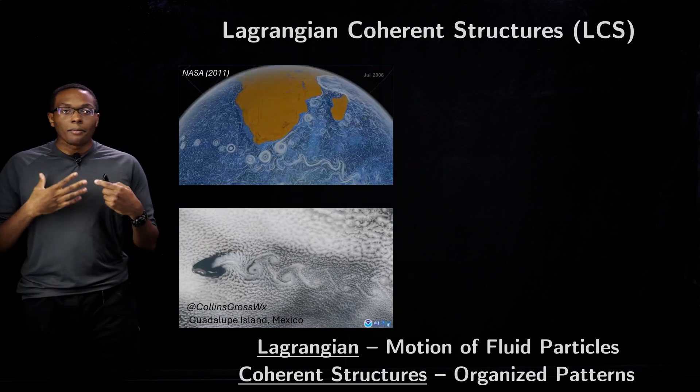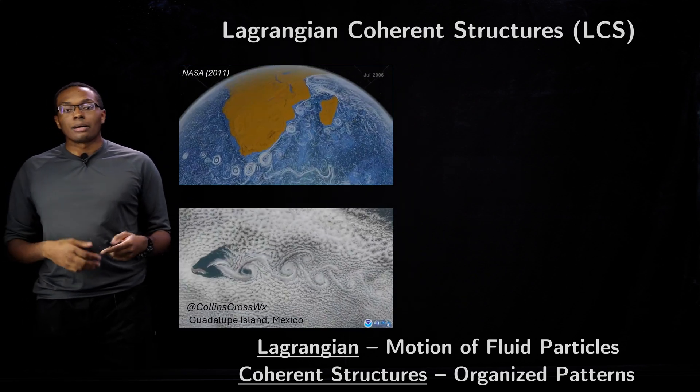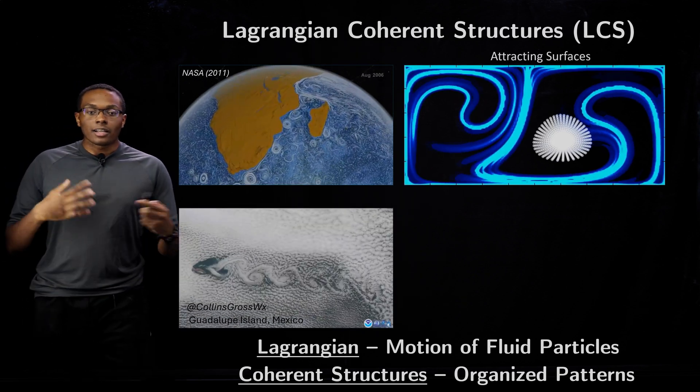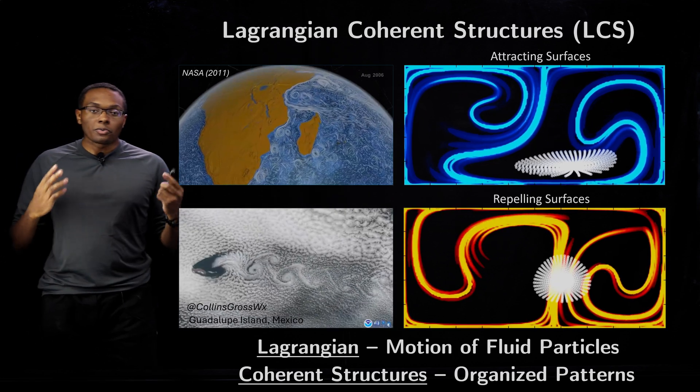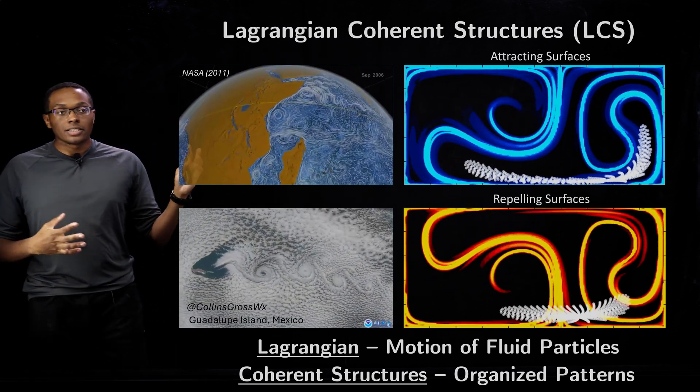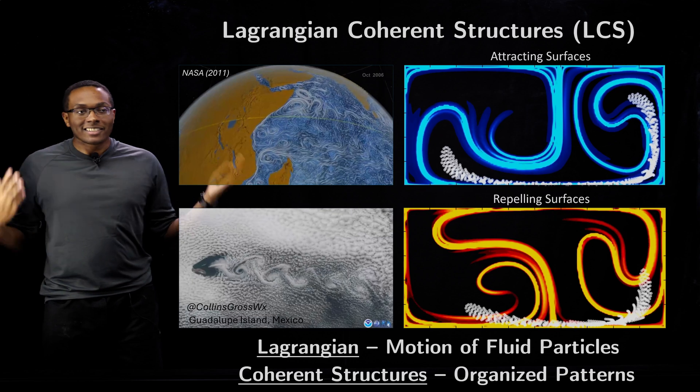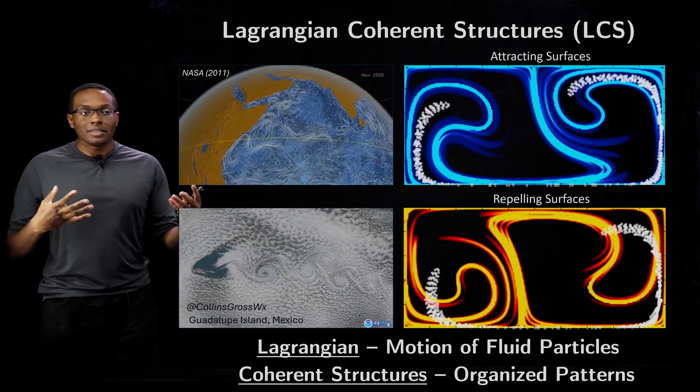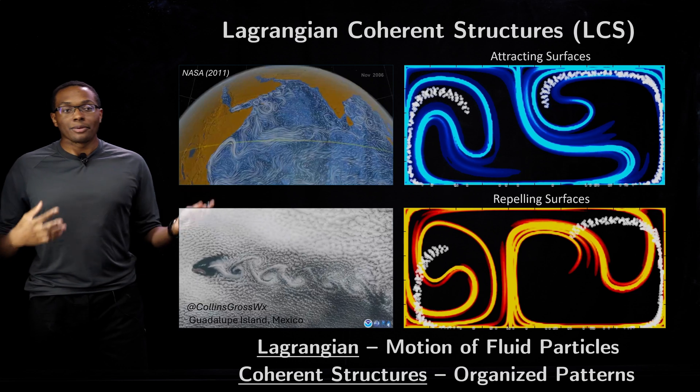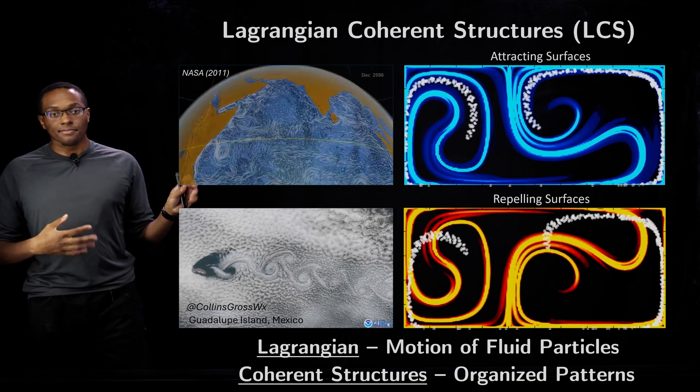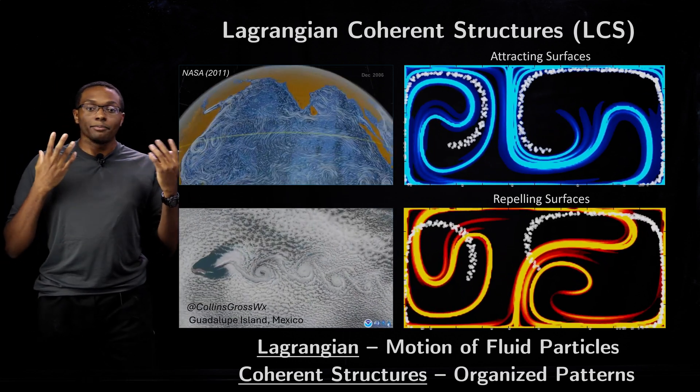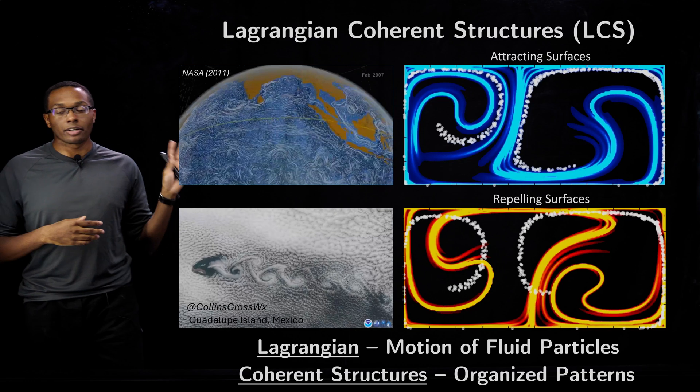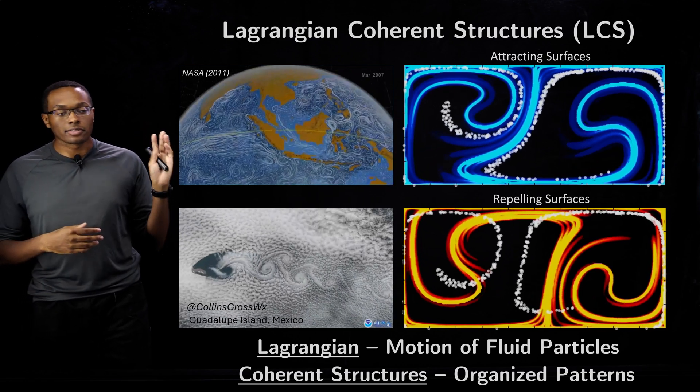A more mathematical approach to describing what LCS are is a collection of attracting or repelling manifolds where these blue regions have particles that are constantly attracted to them, and at the same time these particles are also constantly repelled by these red regions. This is the mathematical perspective in which we can characterize Lagrangian coherent structures.